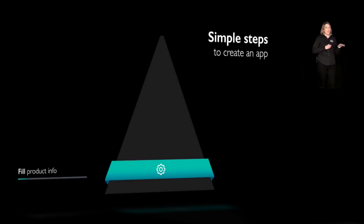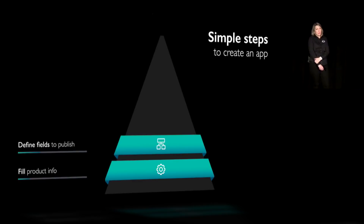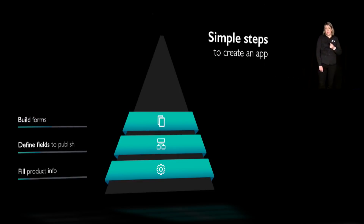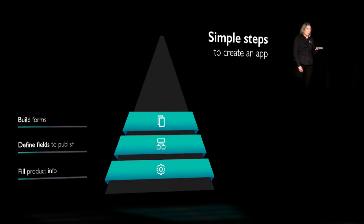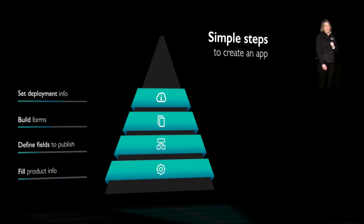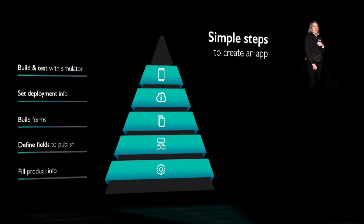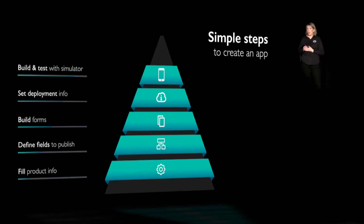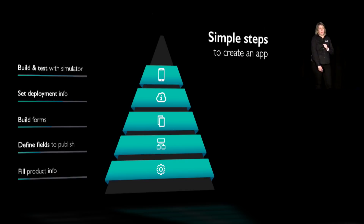So just to recap — with 4D for iOS, you can create your mobile app in a few steps. First, you enter your application's main information. Then you select the tables and fields to be locally replicated on the device. Then you build your list form and detailed form for each table based on templates. Next, you define the deployment information such as the 4D server production URL. Then you generate the mobile app in a single click, test it in the simulator, and once you're happy with it, upload it to a real device to test in real conditions. Finally, you can deploy your app either in-house or through the App Store.